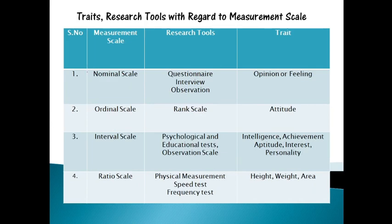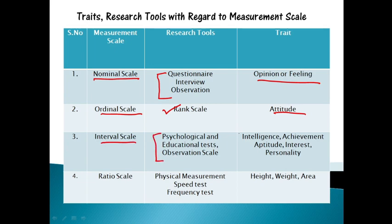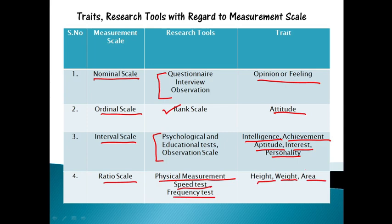Regarding the classification of traits and research tools with regard to measurement scales: in the nominal scale, research tools used are questionnaire, interview, and observation, and the trait is opinion or feeling. In ordinal scale, the research tool is the rank scale and the trait is attitude. In interval scale, the research tools are psychological tests, educational tests, and observation scale, and traits include intelligence, achievement, aptitude, interest, and personality. In ratio scale, the research tools are physical measurement, speed test, and frequency test, and the traits are height, weight, and area.